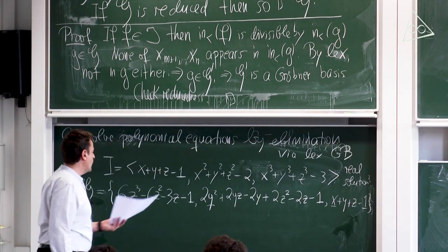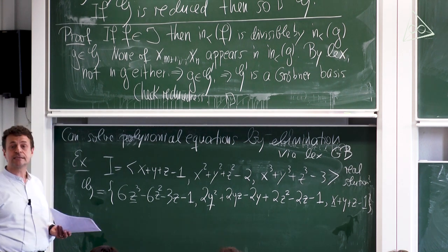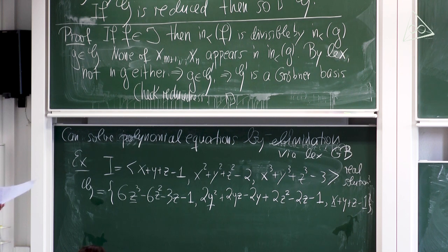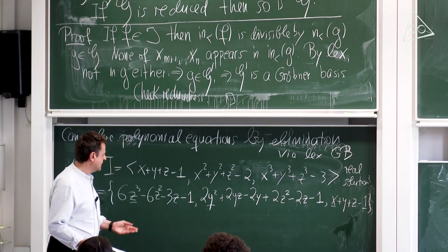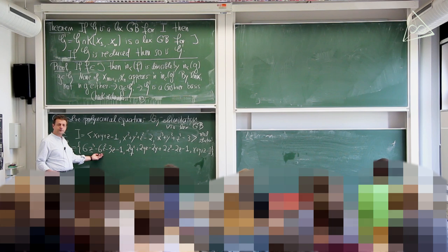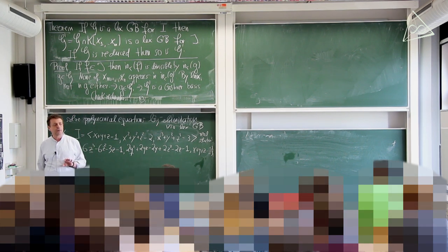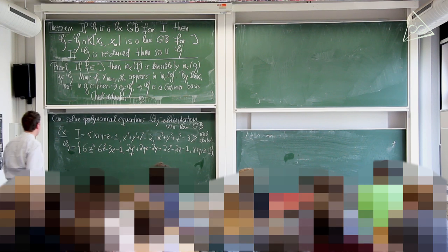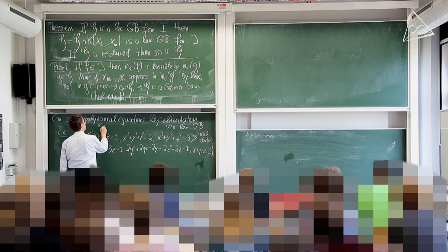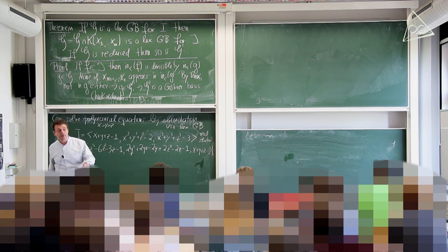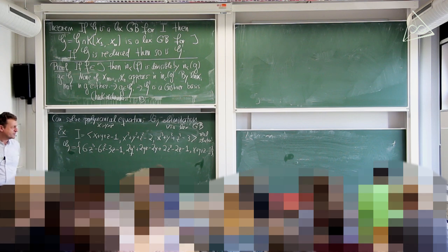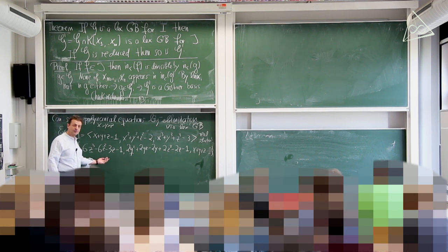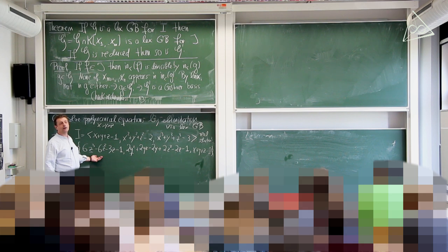I've transformed the three given equations into a triangularized set of three equations with leading terms x, y², and z³. Projecting onto the z-coordinate, the z-values that work are the roots of 6z³ − 6z² − 3z − 1. Then you find the possible y-values, then the x-values. Over the algebraically closed field, there are six solutions, since there are six standard monomials: 1, y, z, yz, z², yz².